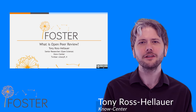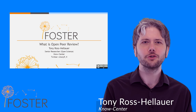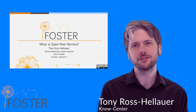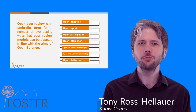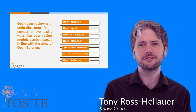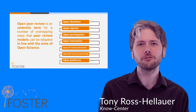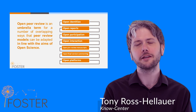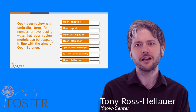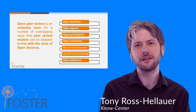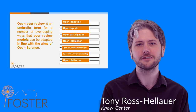Hi, I'm Tony Ross-Hellauer and today I'd like to give you a quick overview of an important element of open science, which is open peer review. Open peer review is an umbrella term for a number of new ways that peer review models can be adapted in line with the aims of open science to bring greater transparency, inclusivity, and accountability to the process.